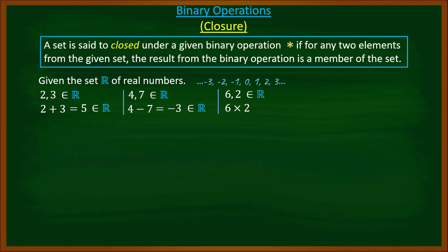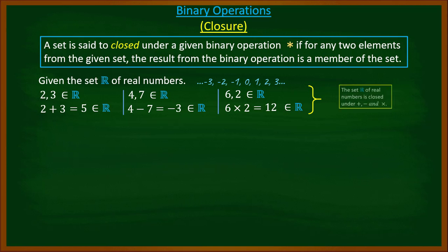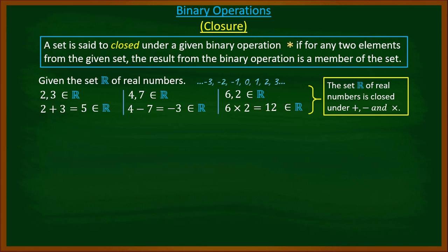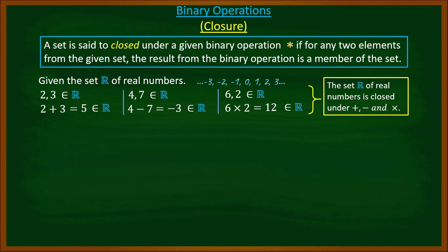We also pick six and two, which are real numbers. Six times two gives us twelve, which is also a real number. Hence the set of real numbers is closed under multiplication. Therefore, the set of real numbers is closed under addition, subtraction, and multiplication, because performing any of these operations on two real numbers always gives a result that belongs to the set of real numbers.